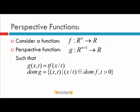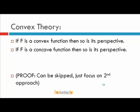The domain of g is the set of all x and t such that x over t is in the domain of f and t is greater than zero. This is the requirement of a perspective function: the variable t must be greater than zero. According to convex theory, if a function f is convex then so is its perspective, and likewise if f is concave then so is its perspective. Convexity of a function is preserved under perspective transformation.